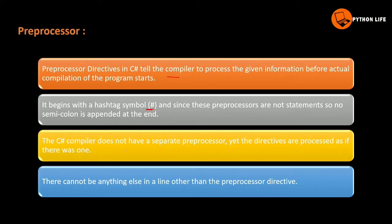The C-Sharp compiler does not have a separate preprocessor. Yet the directives are processed as if there was one. There cannot be anything else in a line other than a preprocessor directive — preprocessor statements and directives are included on one line.